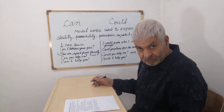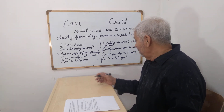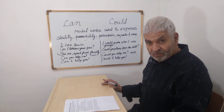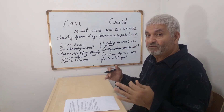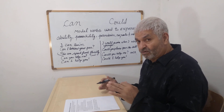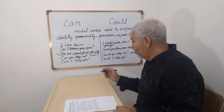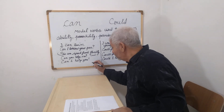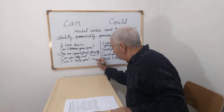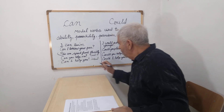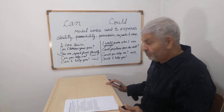'Can I help you?' versus 'Could I help you?' It has something to do with being formal or informal. If you want to be informal, you say 'Can I help you?' When you want to be formal, you say 'Could I help you?'